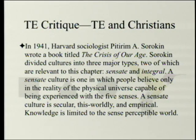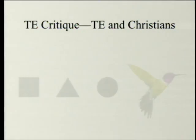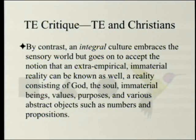In 1941, Harvard sociologist Petirim Sorokin wrote a book titled The Crisis of Our Age. Sorokin divided cultures into three major types, two of which are relevant to this chapter: sensate and integral. A sensate culture is one in which people believe only in the reality of the physical universe capable of being experienced with the five senses — secular, this-worldly, and empirical; knowledge is limited to the sense-perceptible world. By contrast, an integral culture embraces the sensory world but also accepts that an extra-empirical, immaterial reality can be known — a reality consisting of God, the soul, immaterial beings, values, purposes, and various abstract objects such as numbers and propositions.